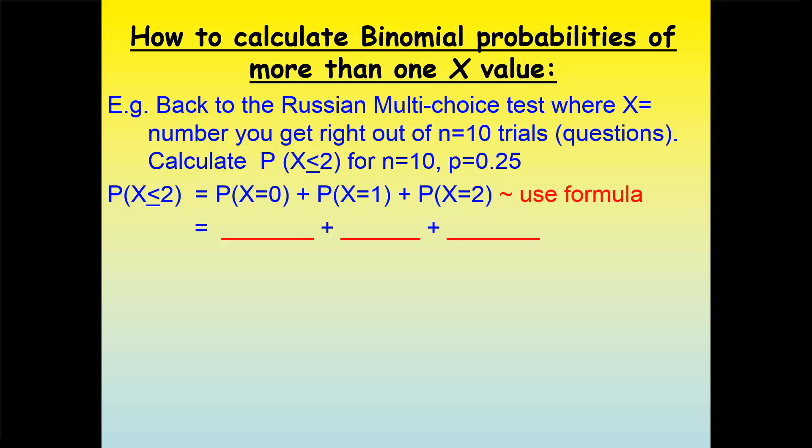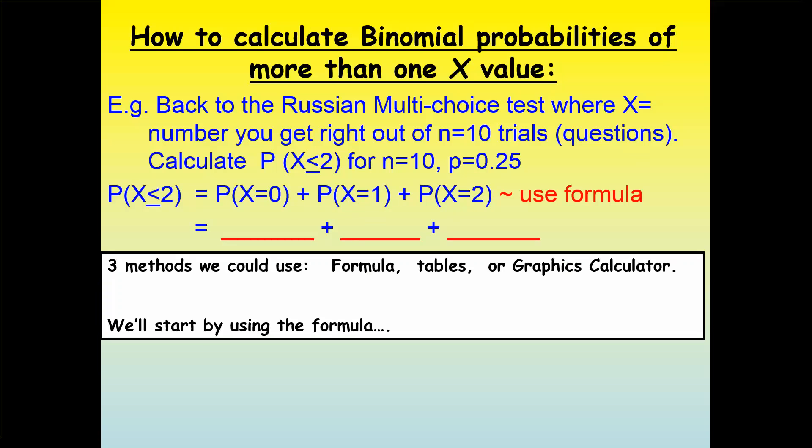There are three ways we can do this. The first way is using the formula. The second way is using the tables which you get on your formula sheet. The third way, which is by far the easiest, is the graphics calculator. So we'll start with the formula — I'm assuming you've been introduced to binomial distribution and understand how it works. If not, you need to figure that out first or see your teacher.